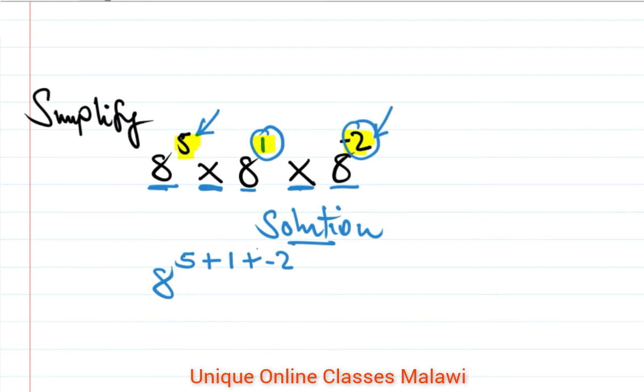So plus and then minus... I'll just put it here as negative. So that gives us 5 plus 1 minus 2, which is 6 minus 2, equals 4.